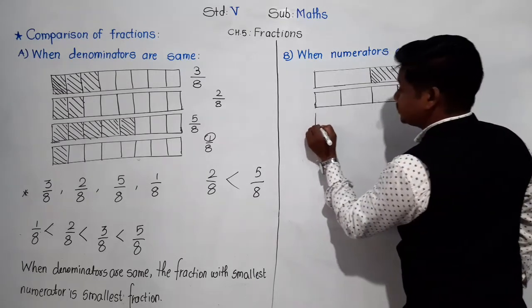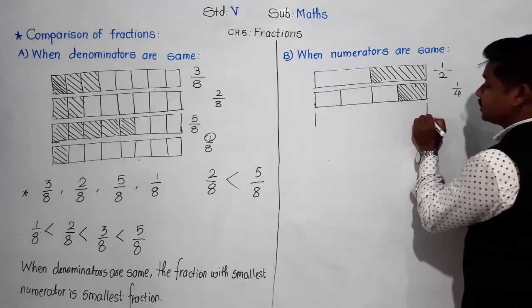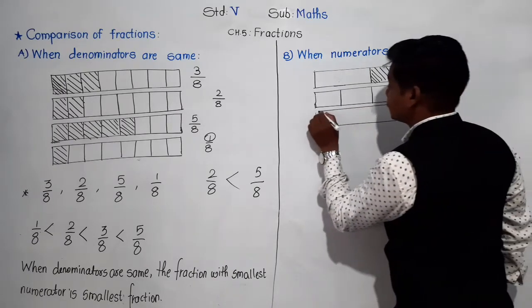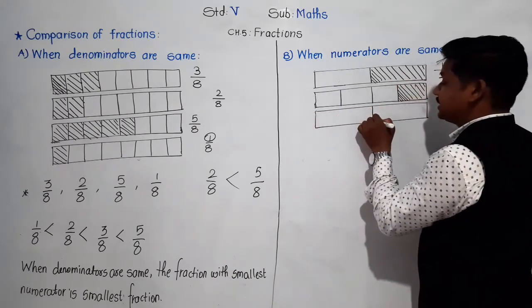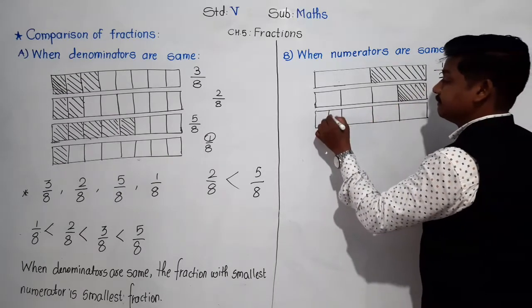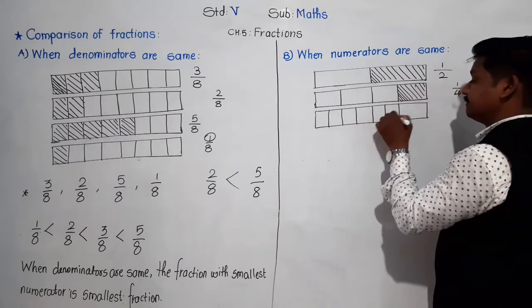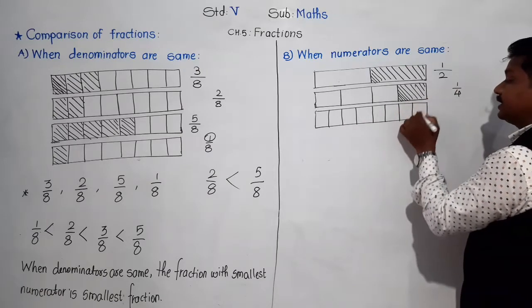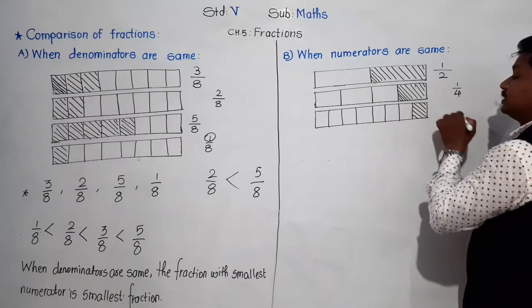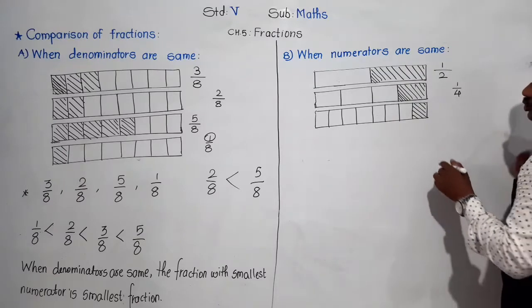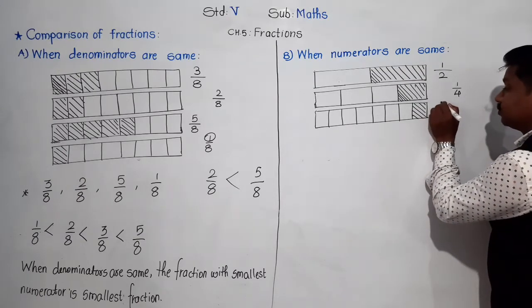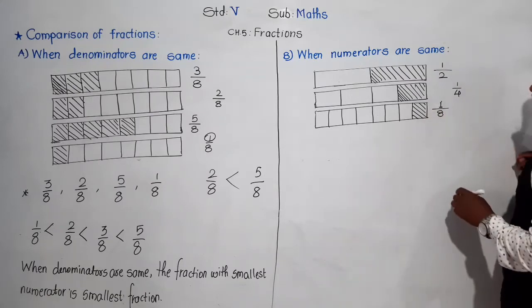Then again the same chocolate is there. This time it is divided into eight equal parts, and out of eight, one is shaded. So the fraction is 1/8.